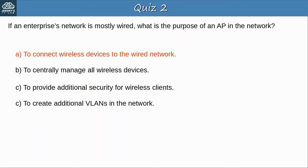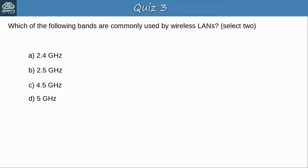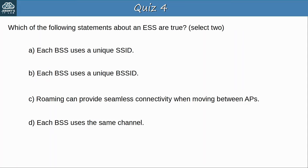Question 3: Which of the following bands are commonly used by wireless LANs? Select 2. The answers are A, 2.4 GHz, and D, 5 GHz. These bands are divided into channels which are used by wireless devices to send and receive wireless signals. Question 4: Which of the following statements about an ESS are true? Select 2. The answers are B — each BSS uses a unique BSSID — and C — roaming can provide seamless connectivity when moving between APs. A is incorrect because each BSS in an ESS should use the same SSID, and D is incorrect because adjacent APs should use non-overlapping channels to avoid interference.